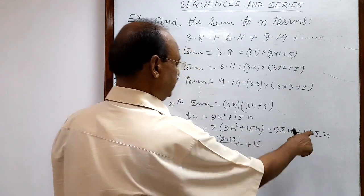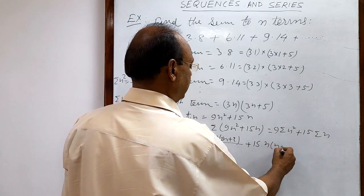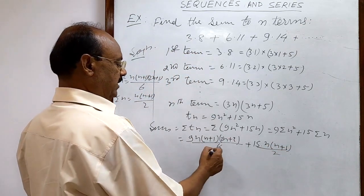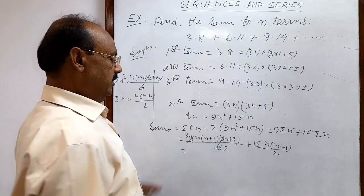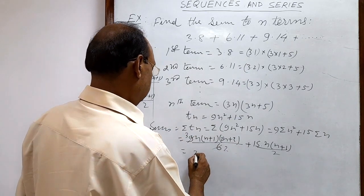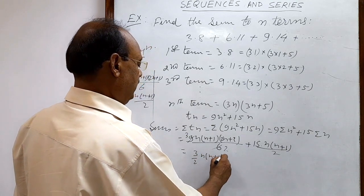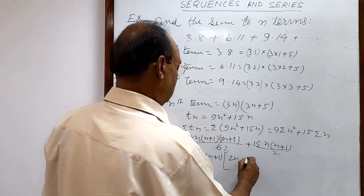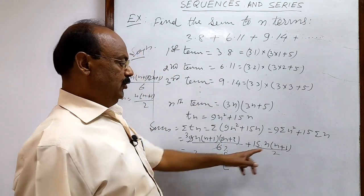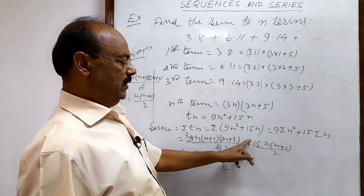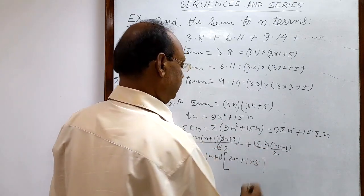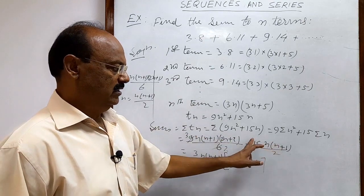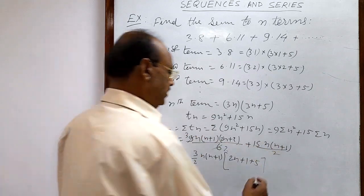The second term is 15 × n(n+1)/2. Simplifying: 9/6 = 3/2, so both terms share the common factor 3/2 · n(n+1). Factoring that out gives 3/2 · n(n+1) × [(2n+1) + 5], which equals 3/2 · n(n+1)(2n+6).